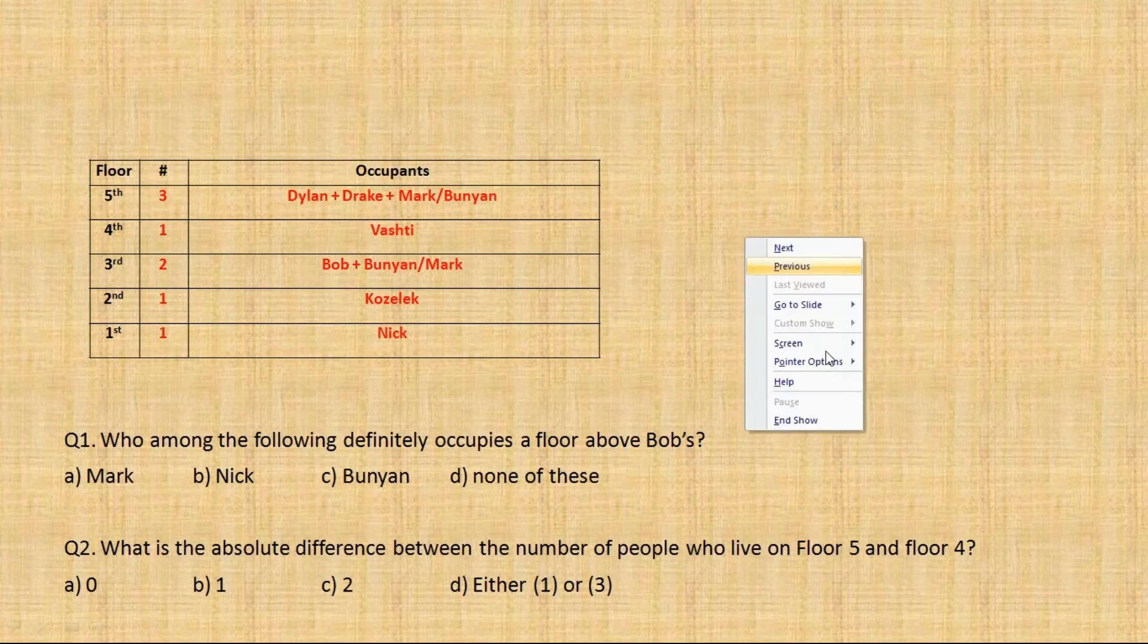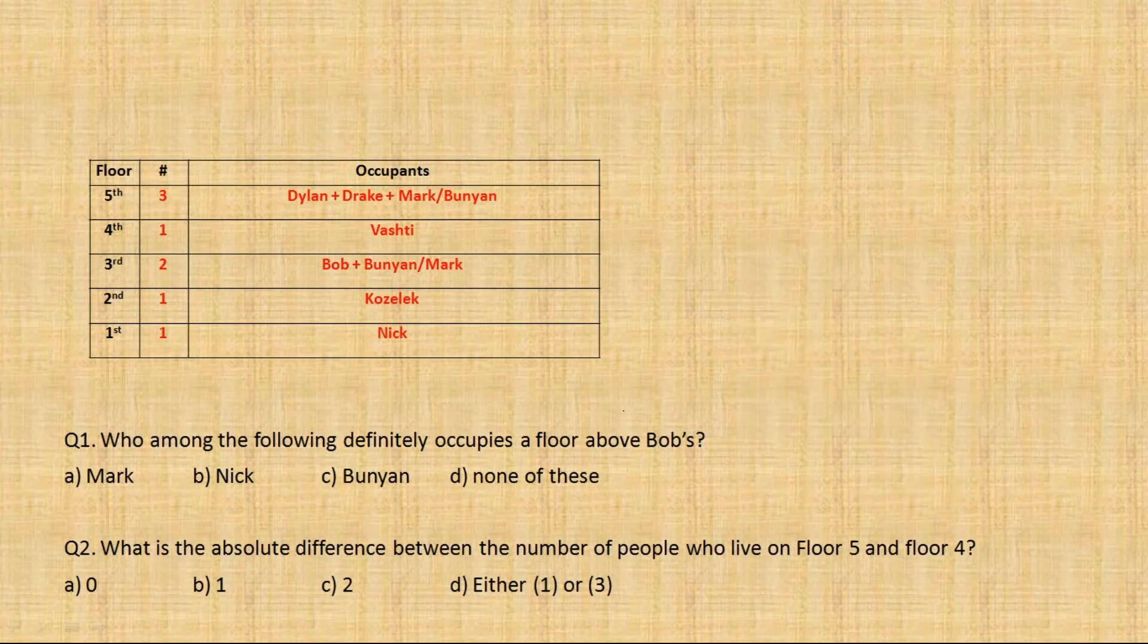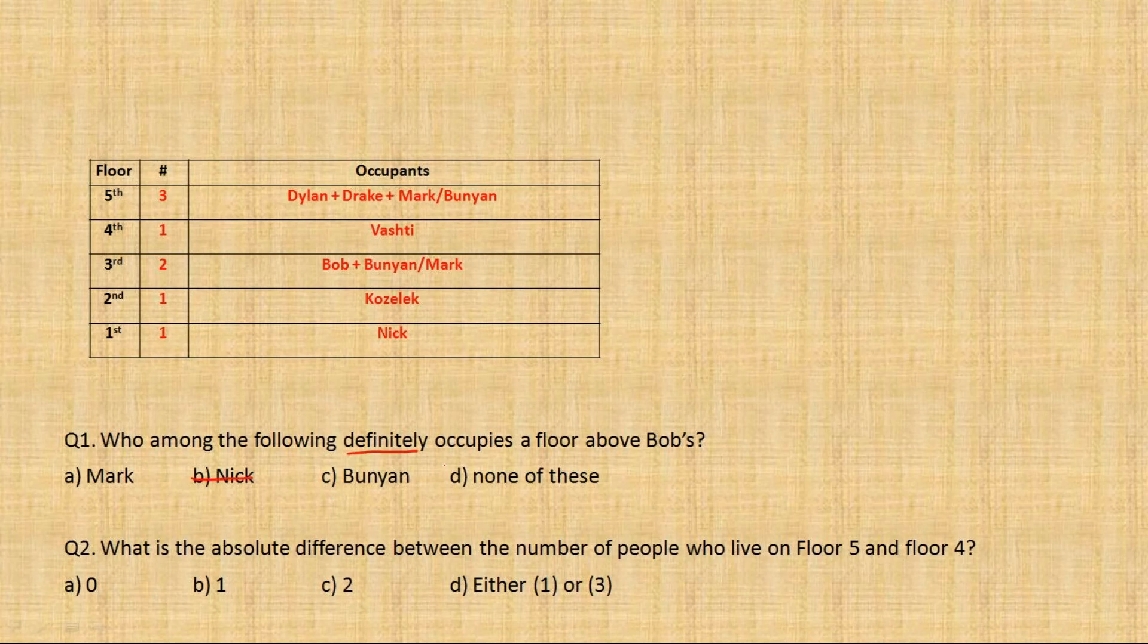Alright, the 1st question. Who among the following definitely occupies a floor above Bob's? Okay, so above Bob there are Vashti, Dylan, and Drake, and one between Mark and Bunyan. So Mark and Bunyan ka toh pata nahi hai. One of them definitely, but which of them we cannot choose on our own. Nick definitely not. So unfortunately, we have to mark the 4th option, none of these, because definitely we cannot say about any of these 2 people.